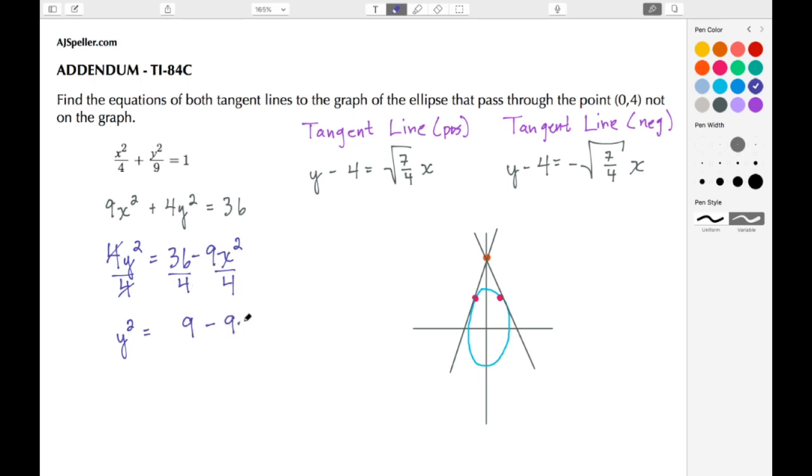Minus, and I'm going to rewrite this second term here. I don't want y², I just want y, so I need to take the square root of both sides of this equation. Doing so, y² becomes y, and then I have a positive and negative expression: 9 minus 9x² over 4.